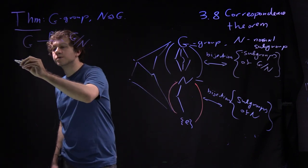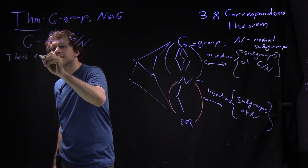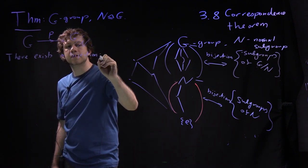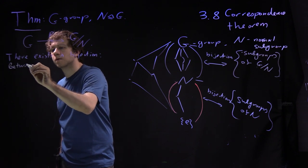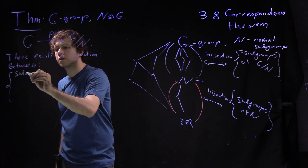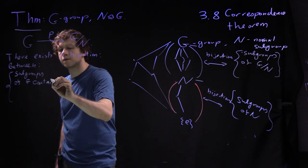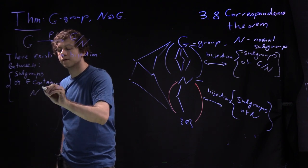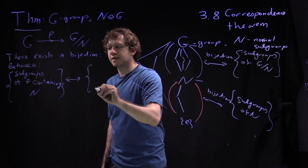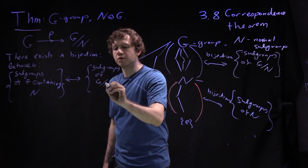Then the statement is: there exists a bijection between two sets. On one hand you have subgroups of G containing N, and on the other hand you have subgroups of G factored over N.